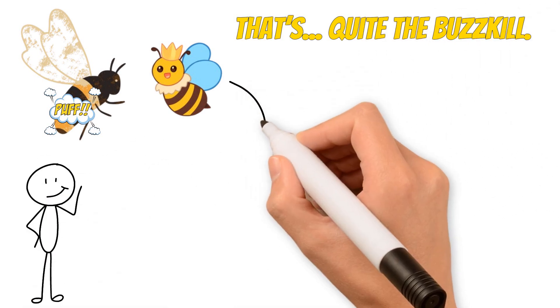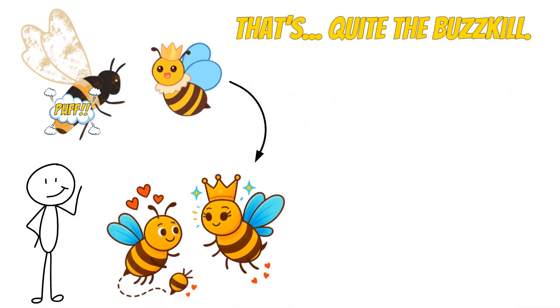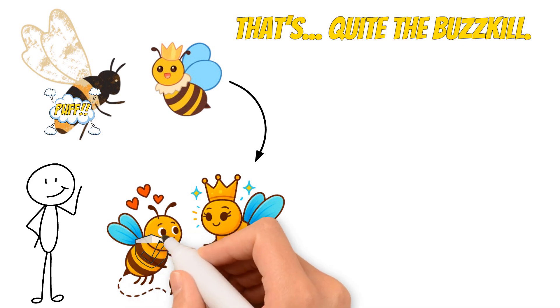But it's not a problem for the queen, because she goes on to mate with a bunch of other enthusiastic party poppers to gather genes for her hive.